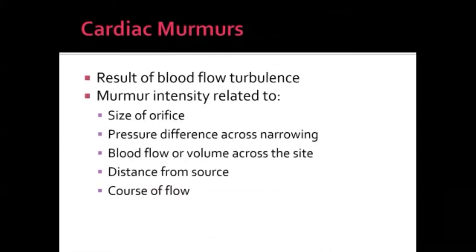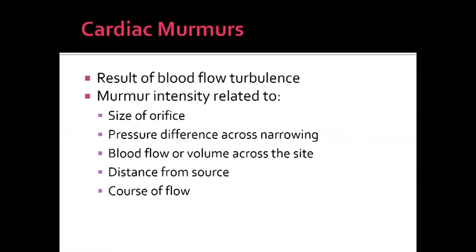Murmurs are caused by flow turbulence through heart chambers. The intensity doesn't necessarily correlate with severity — it depends on orifice size, pressure difference across the narrowing, and overall blood flow. In stenotic cases, a smaller orifice can produce a louder murmur. A hyperdynamic state can produce a loud murmur without severe disease. Location of the lesion relative to the stethoscope also affects intensity.